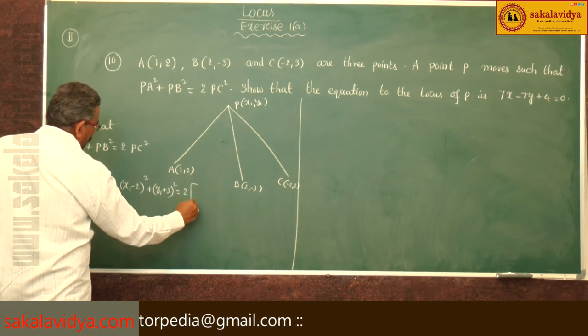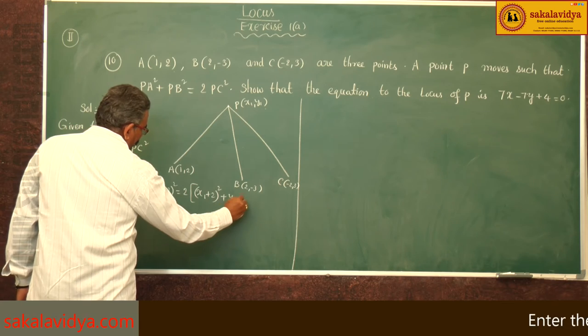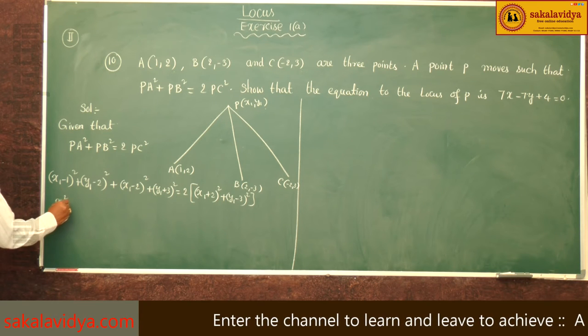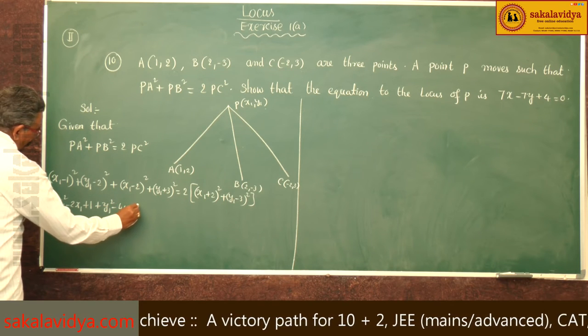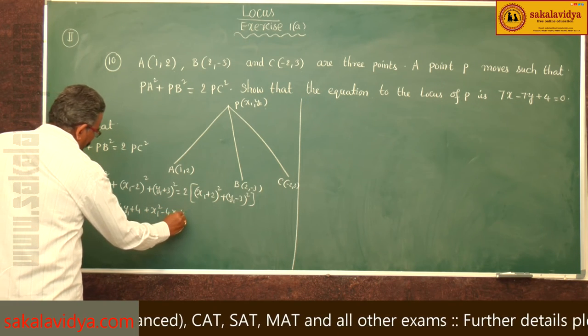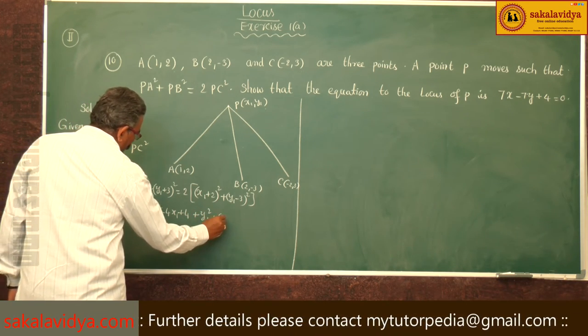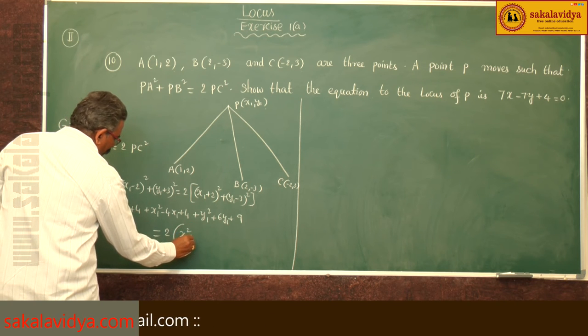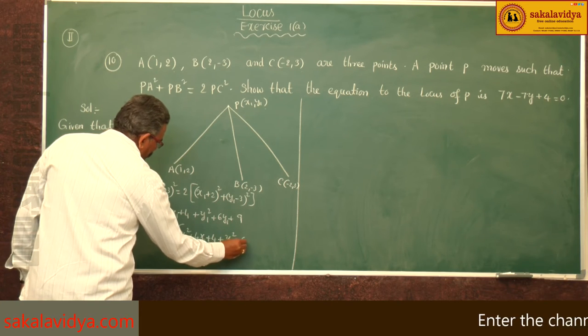This equals x₁² - 2x₁ + 1 + y₁² - 4y₁ + 4 plus x₁² - 4x₁ + 4 + y₁² + 6y₁ + 9 equals 2 times (x₁² + y₁² plus 4x₁ - 6y₁ + 13).